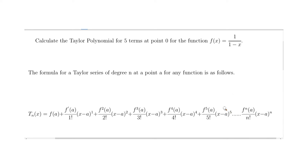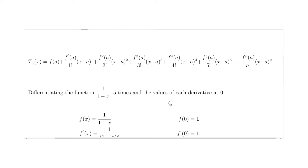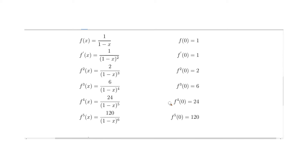Next we need to differentiate the function. We're going to differentiate 1 over 1 minus x five times and calculate each derivative at the value zero. We draw a table — I'll show a nice easy shortcut way of differentiating 1 over 1 minus x. To calculate the function at zero, just plug in zero: 1 over (1 minus 0) is 1 over 1, which is 1.